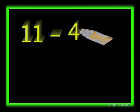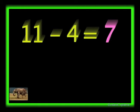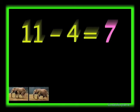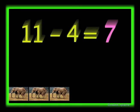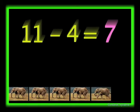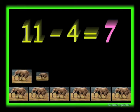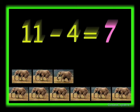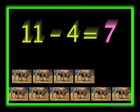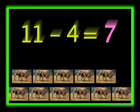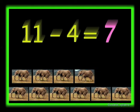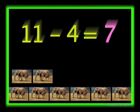Eleven minus four equals seven. There are eleven elephants: one, two, five, six, seven, eight, nine, ten, and eleven. Out of the eleven elephants, if four elephants walk away, then seven elephants will be left. One, two, three, four. So eleven minus four equals seven.